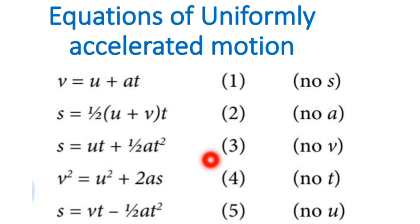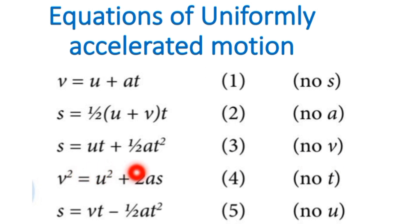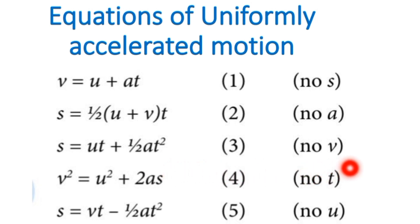The fourth equation eliminates time to find final velocity: final velocity squared is equal to initial velocity squared plus 2 times acceleration times displacement. The fifth equation: displacement is equal to final velocity times time minus 1 over 2 acceleration times time squared.